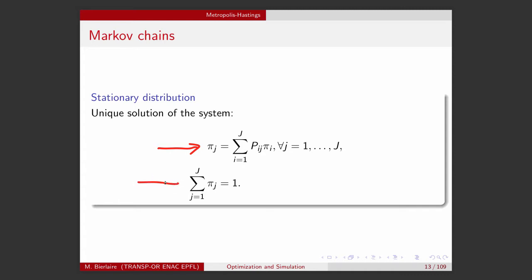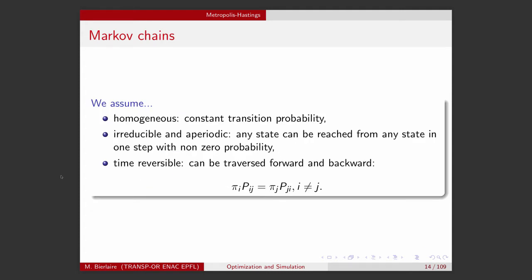Of course, this must be a valid probability mass function. We will assume the following about our Markov chains: that it is homogeneous, so it has a constant transition probability Pij; and that it is irreducible and aperiodic. I will not define these concepts — you will find the definition in the appendix of the slides or on the internet. Basically, it means that any state can be reached from any other state in one step with non-zero probability.